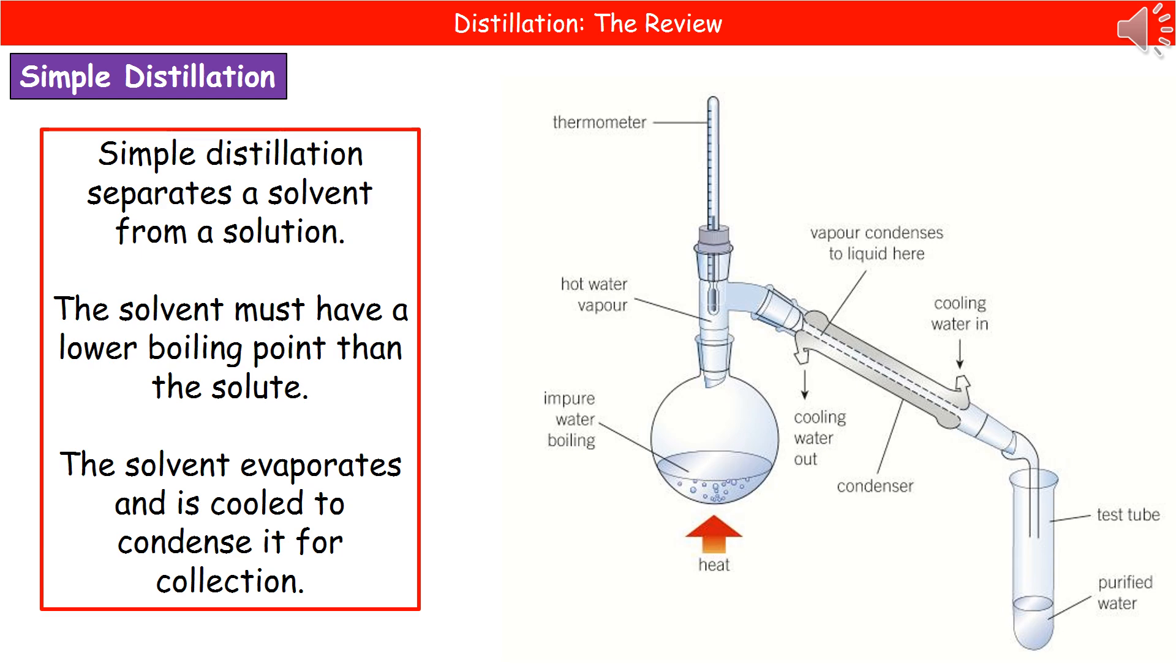So what actually happens here is you've got your piece of equipment on the right hand side there. In our round bottom flask, we've got our impure solution. We've then got that connected into this little tube that goes down, and you can see it's got water that runs along the side. The whole idea behind that is to actually cool down the gas. So that bit of equipment is called a condenser.